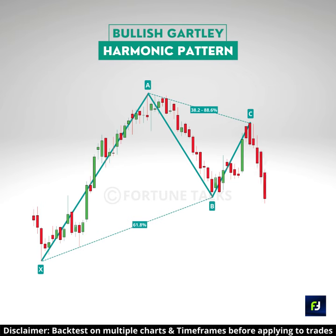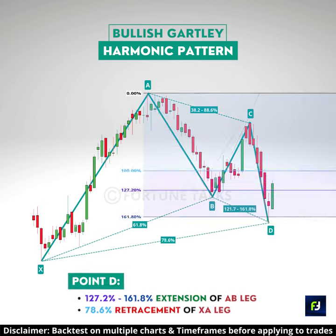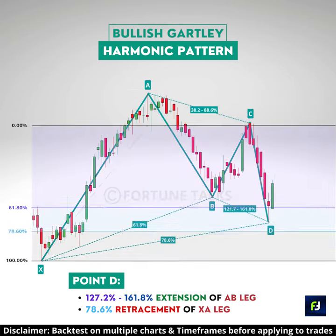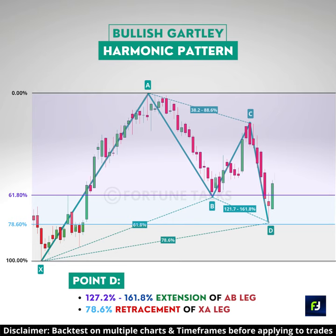From point C, price reverses lower, forming CD. CD should extend between 127.2 to 161.8% of the AB leg, and the overall move from point A to D should be a 78.6% retracement of the XA leg.